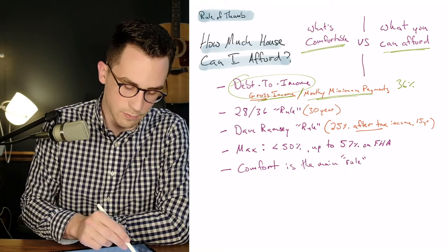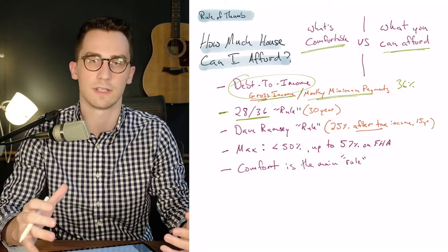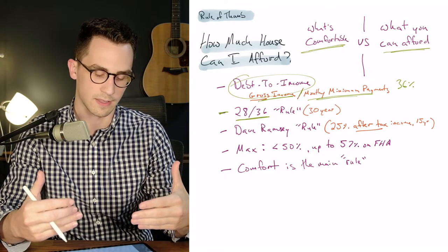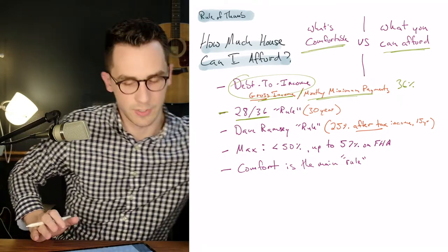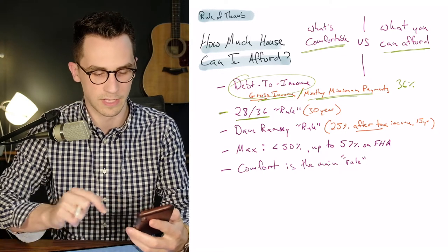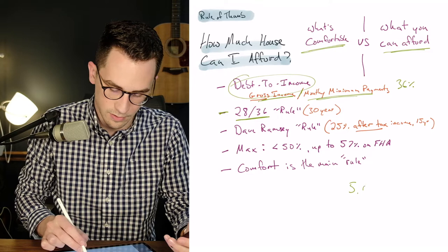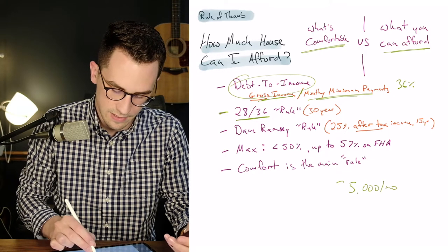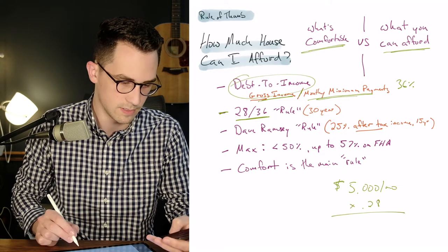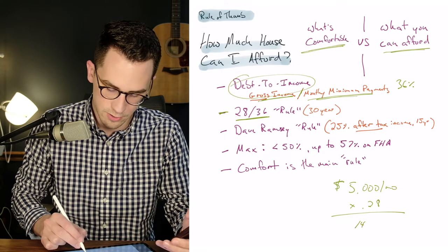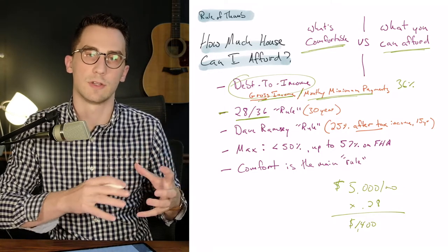So one rule that's kind of thrown out on the internet is this 28/36 rule. This is for a 30 year loan. The 28/36 rule basically says your debt to income ratio just for your mortgage payment that you're going to get should be 28% or less. So I'm going to pull out a calculator here so I can do some of this math a little bit easier. But the 28/36 rule would basically say, if you have, let's say a $5,000 per month income, so this is $5,000 per month gross, if you did that times 28%, your max mortgage payment would be $1,400.